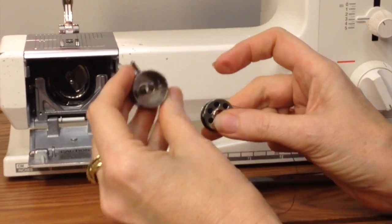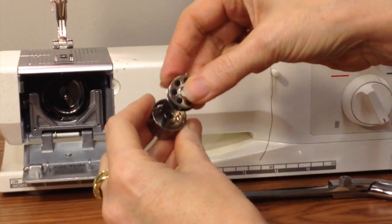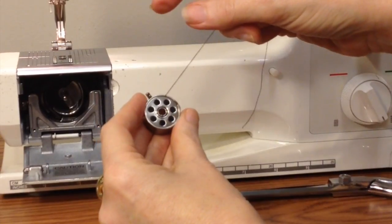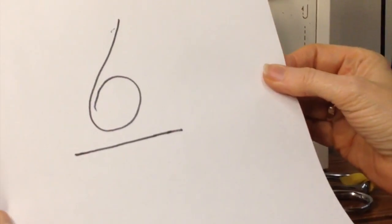Now, the way the bobbin goes into the bobbin casing is important. You want it to go in with the thread coming off of the top as if it were a number six.